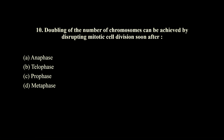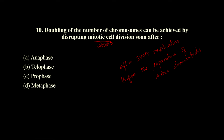Doubling of the number of chromosomes can be achieved by disrupting mitotic cell division soon after which stage? The doubling happens after DNA replication and before the separation of sister chromatids, which occurs in anaphase. Before anaphase there is metaphase, where chromosomes align at the center of the cell. The correct option is D, metaphase.